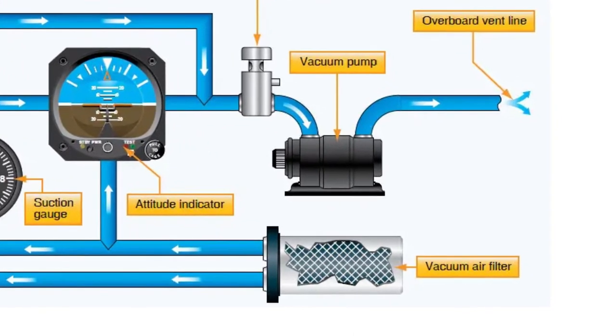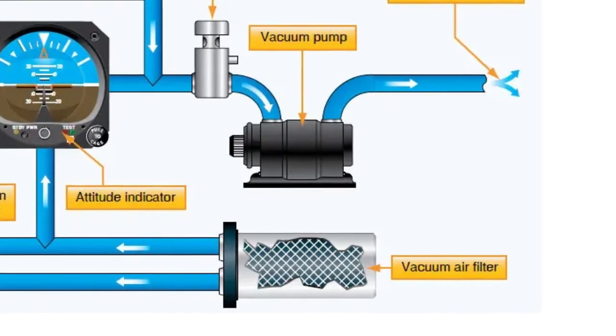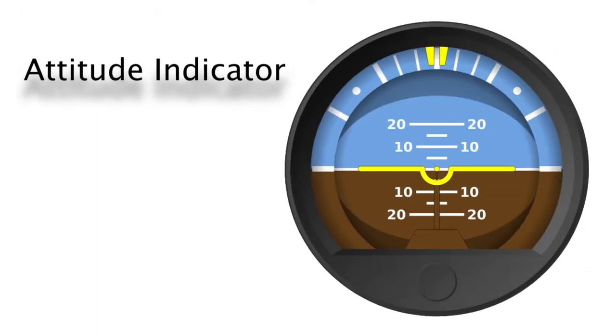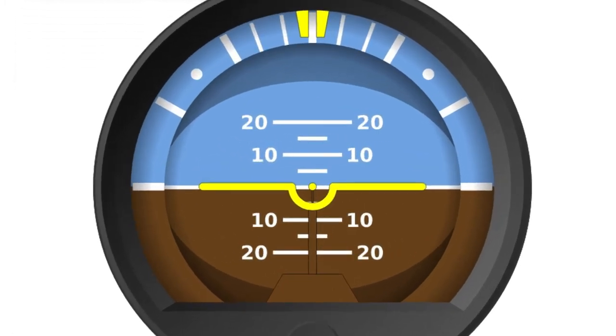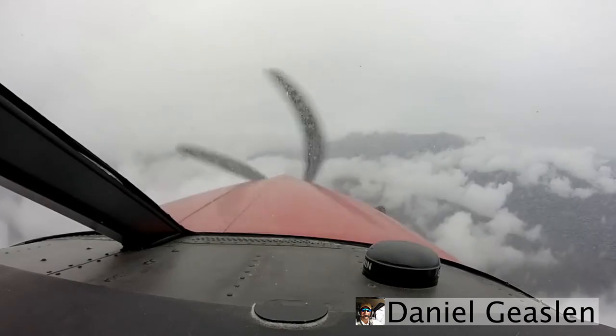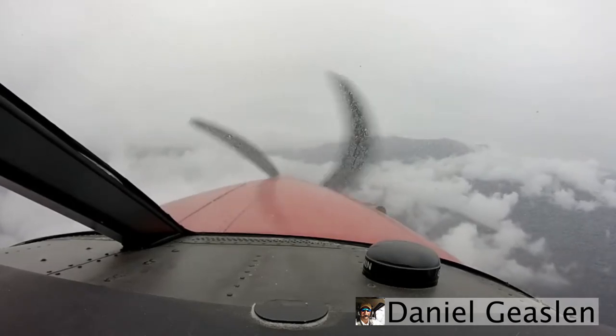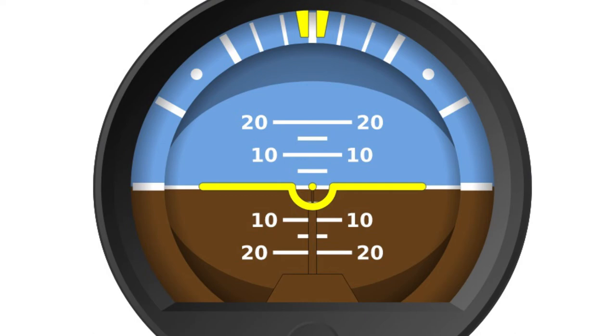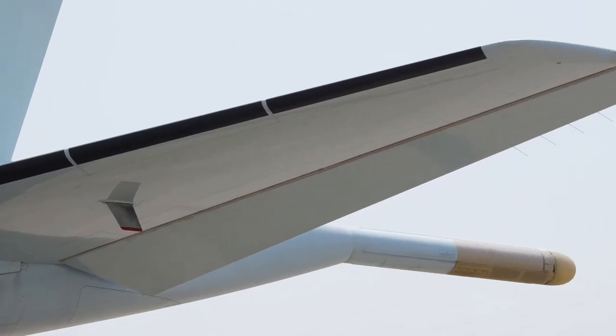Attitude indicator or artificial horizon gives you an image of the aircraft's wings relative to the ground and the sky. And this instrument can be always very useful, especially when the sky is not clear, say it's cloudy. It's sensitive to two motions: pitch and roll. These lines in the middle indicate the degree of pitch relative to the horizon when you use elevators on the horizontal stabilizer.